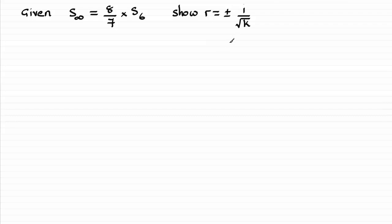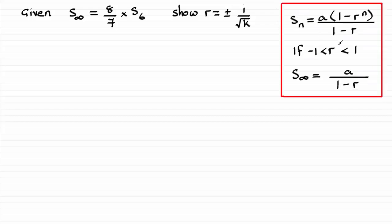Well, you should already be familiar with the formula for the sum to infinity and the sum of the first n terms of a geometric progression. Just a brief reminder. There's the sum of the first n terms. Remember A is the first term in the progression. And if the common ratio r lies between minus 1 and 1, then the sum to infinity is given by this formula.